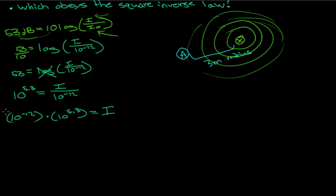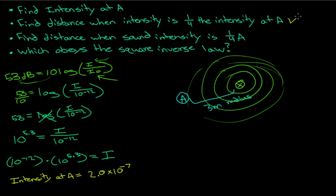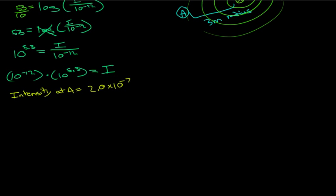So we take 10 to the negative 12 and multiply that by 10 to the 5.3, and that gives us our current intensity. Putting this into a calculator, the intensity at A equals 2.0 times 10 to the negative 7 watts per meter squared. Now we need to find the distance when the intensity is one quarter of the intensity that we just found.